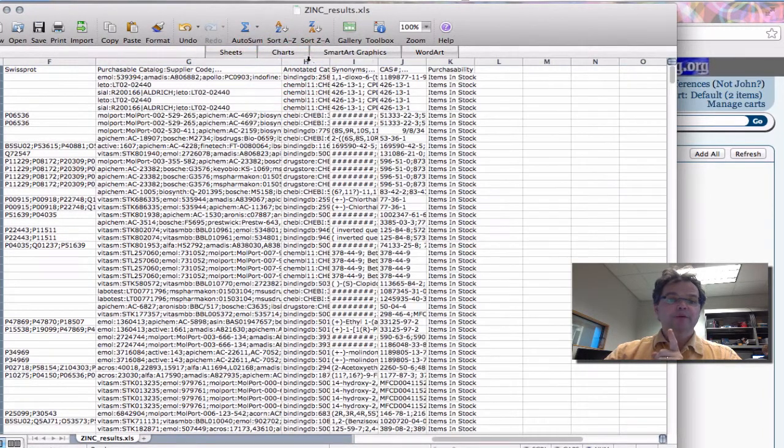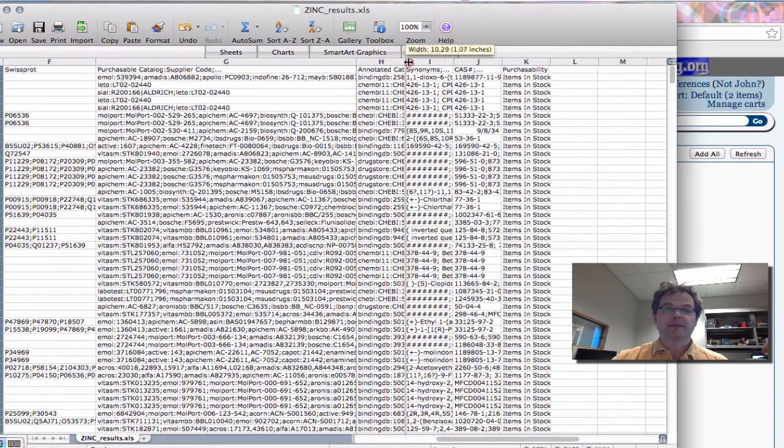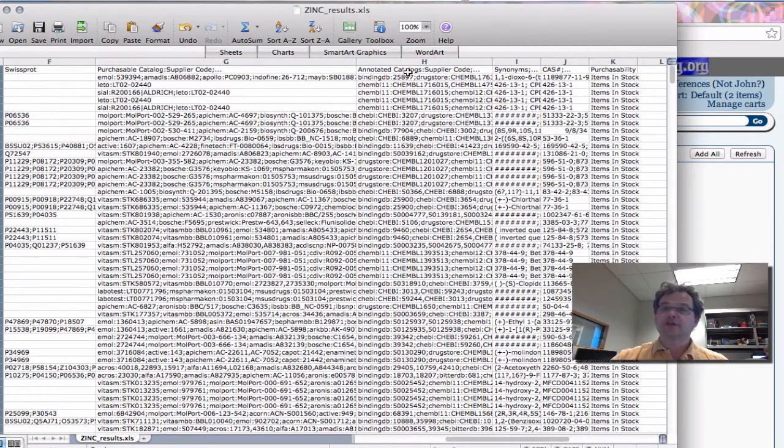So purchasability, how about this compound? Purchasability. So we use little abbreviations here. So emol means e-molecules. Amadis, Apollo, Indofine. Generally these things should be clear to you, but you can use our website to find out what these codes mean also. Annotated catalogs. So these are not commercially available, but interesting. So Kemble 11, and that's what it's called in Kemble 11.